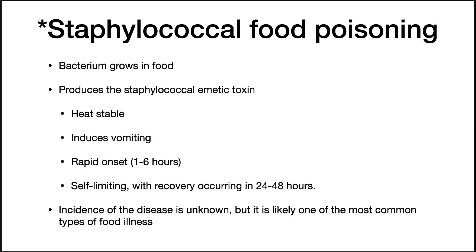Not only do Staphylococcus strains produce all sorts of nasty infections, some strains of S. aureus produce an emetic toxin. The bacterium grows in food and produces the toxin, and the toxin is heat-stable and will cause a strong emetic response — that means it will make you vomit. The disease is distinctive with its rapid onset of 1-6 hours. It is self-limiting, and sufferers usually feel better in 24-48 hours.